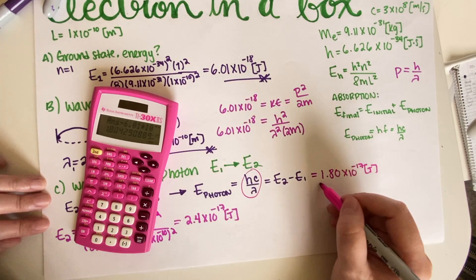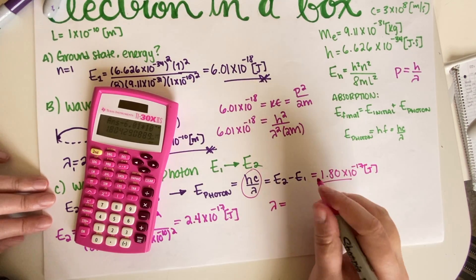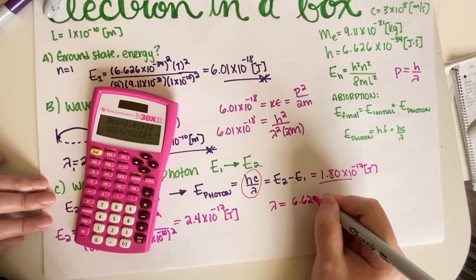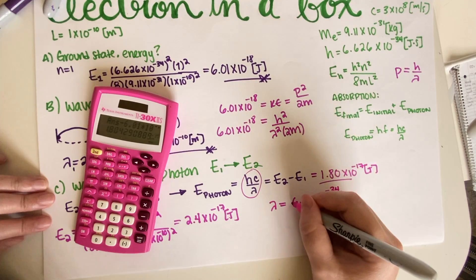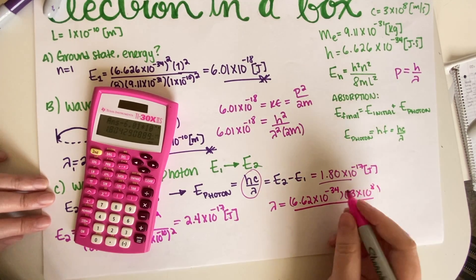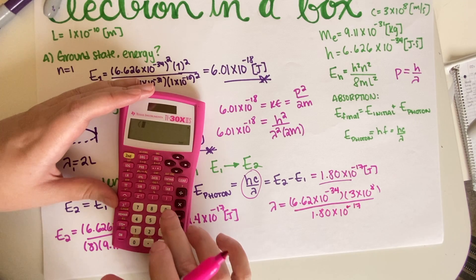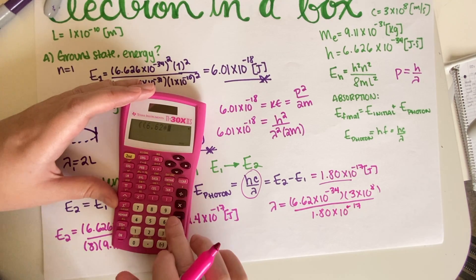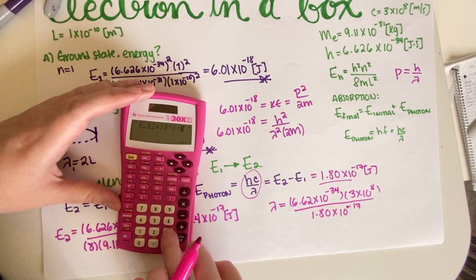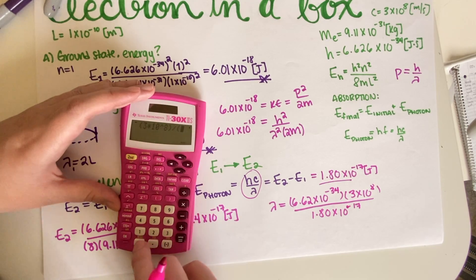Now lambda = hc / E_photon. So lambda = (6.626 × 10⁻³⁴ × 3 × 10⁸) / (1.80 × 10⁻¹⁷). Entering this into the calculator.